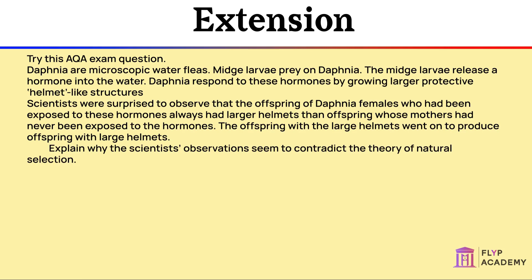Natural selection operates on successful characteristics produced by chance or a random mutation that are passed on over generations. In this experiment, the successful characteristic is caused by exposure to certain hormones.